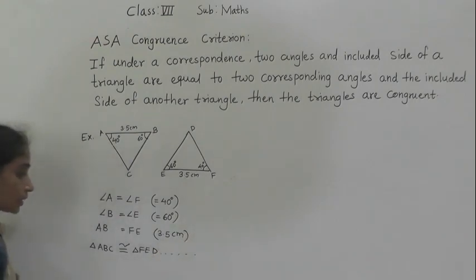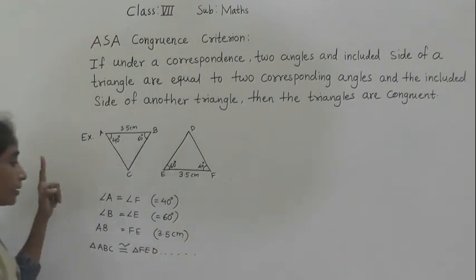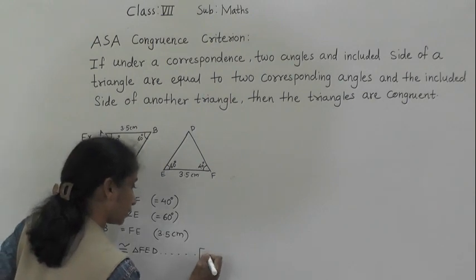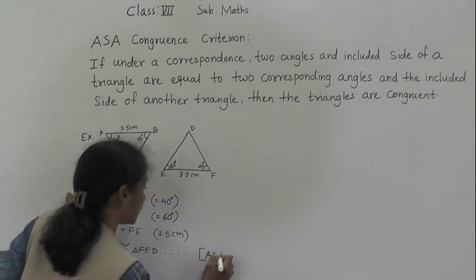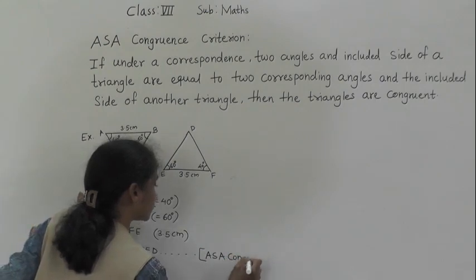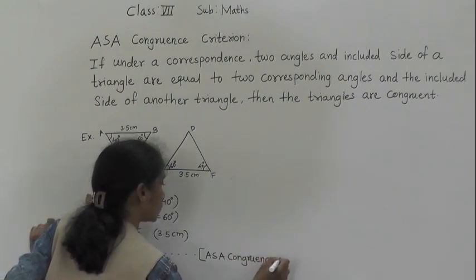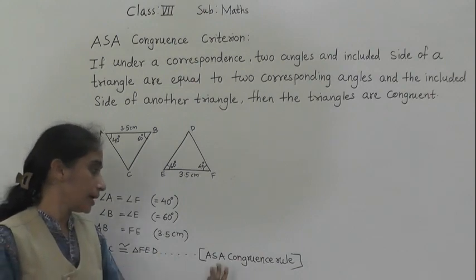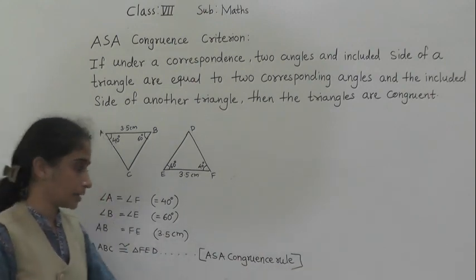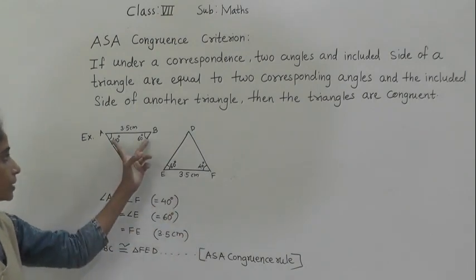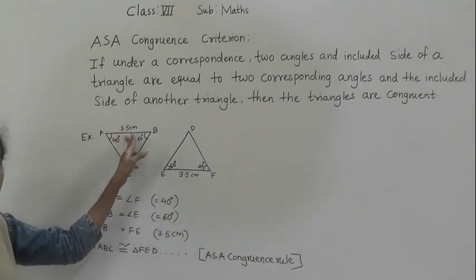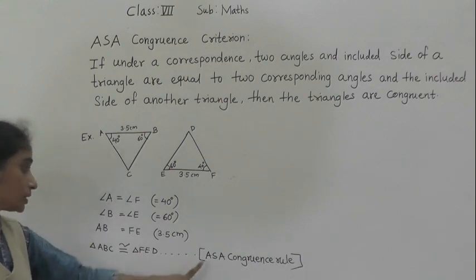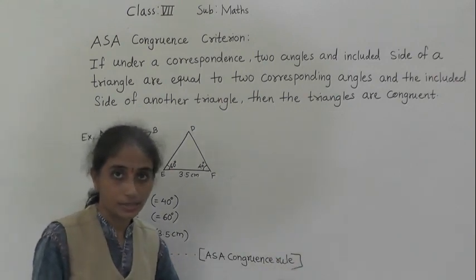Why are both these triangles congruent? By the ASA congruence rule — angle, side, angle. Two angles and the included side of this triangle are equal to the two angles and the included side of another triangle, so both triangles are congruent by the ASA congruence criteria.